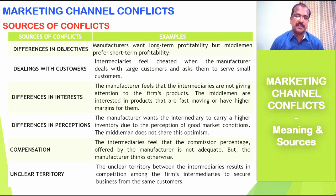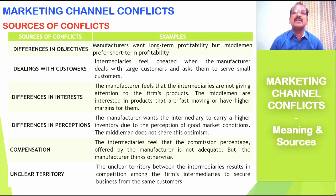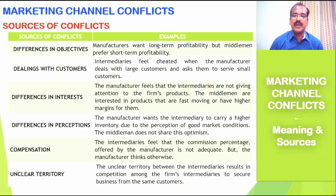The fourth source is differences in perceptions. The manufacturer wants the intermediary to carry a higher inventory in anticipation of good demand in the near future, but the intermediary does not share this optimism — they only request stock from manufacturers when demand actually appears in front of them. The fifth source of conflict is compensation. The intermediaries feel that the commission percentage offered by the manufacturers is not adequate, but the manufacturer thinks otherwise, leading to disagreement in sharing profitability.